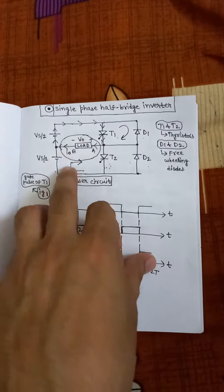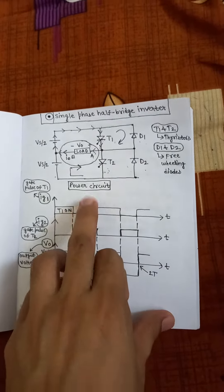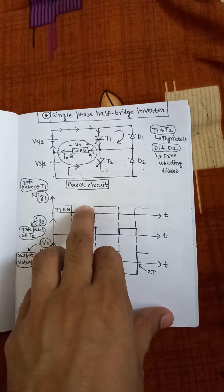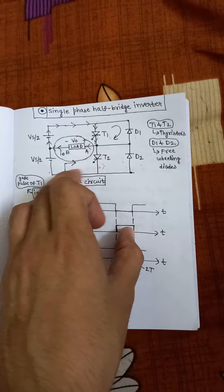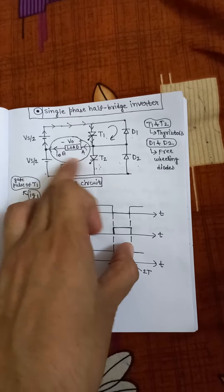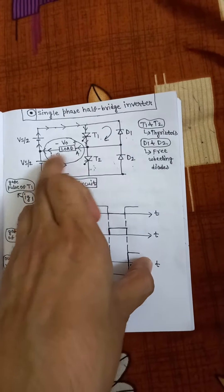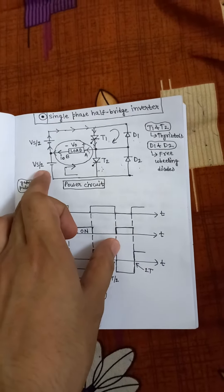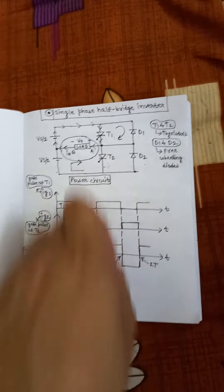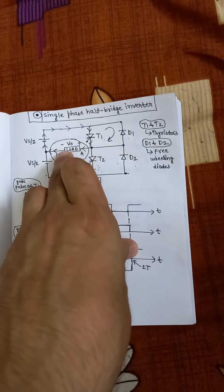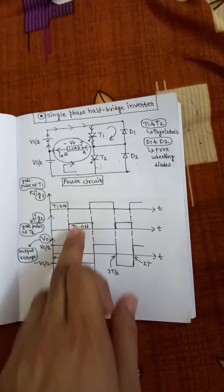When we remove the gate pulse from T1 and apply the gate pulse to T2 in the next half cycle, T1 becomes off. When we apply voltage Vs/2 across T2 and apply the gate pulse, current starts flowing in this direction. But our load current I0 is always flowing in the original direction, while the actual current is flowing in the opposite direction. So we get Vs/2 across the load V0, but in the negative direction, that is minus Vs/2, because both currents are flowing in opposite directions — I0 in one direction and the thyristor current in the other. So we get minus Vs/2 when T2 is on.